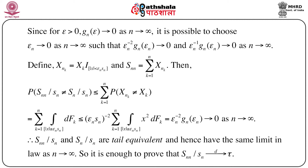So we have P(S_{nn}/s_n ≠ S_n/s_n) → 0 as n → ∞. This immediately implies that S_{nn}/s_n and S_n/s_n are tail equivalent and hence have the same limit in law as n → ∞. Therefore, in order to show S_n/s_n → τ in distribution, it is enough to show S_{nn}/s_n → τ in distribution.